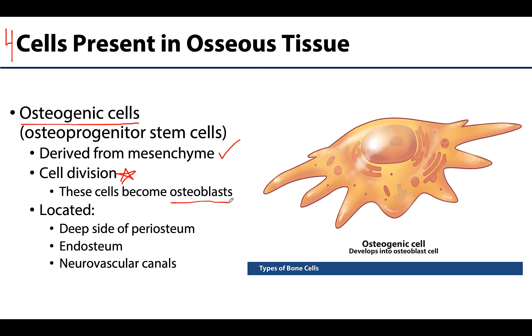You'll find osteogenic cells within the inner portions of the outer periosteum, around the endosteum or surrounding the inner portions of the bone, and also in many of the neurovascular canals of bone.